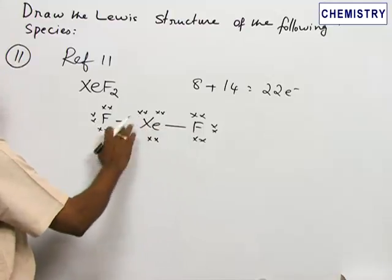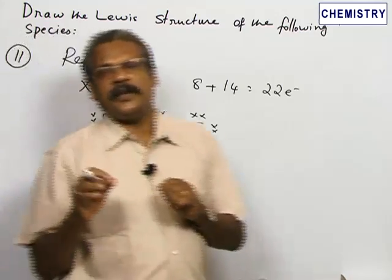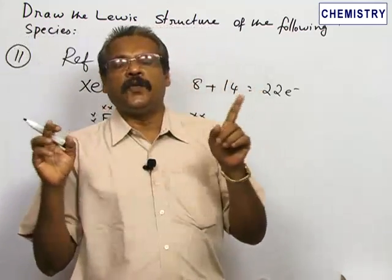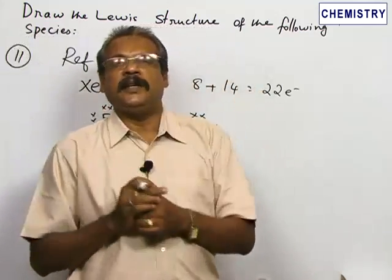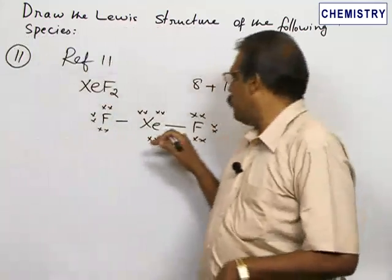So xenon difluoride: the xenon has an expanded octet with two fluorine atoms on either side. This is the Lewis structure of xenon difluoride.